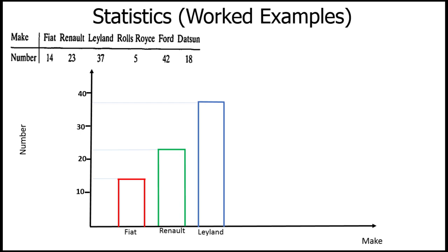For Rolls-Royce we have 5 cars. Take your ruler to the 5 mark, make it horizontal and parallel to the make axis - 5 is between 10 and zero, so that is near the bottom. Rule the line parallel to the make axis, then draw the vertical bars parallel to the number axis. Draw the second vertical bar and cover it up. Label it Rolls-Royce.